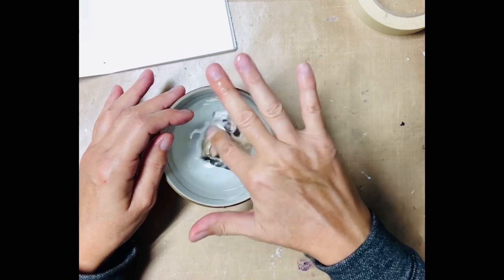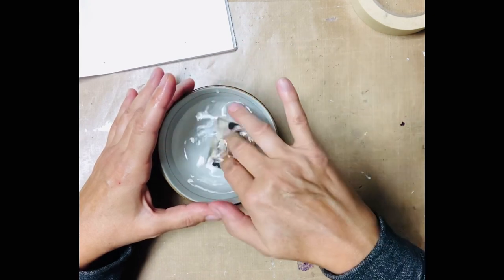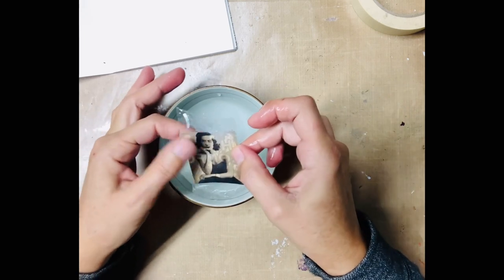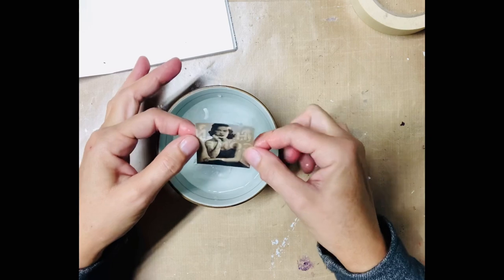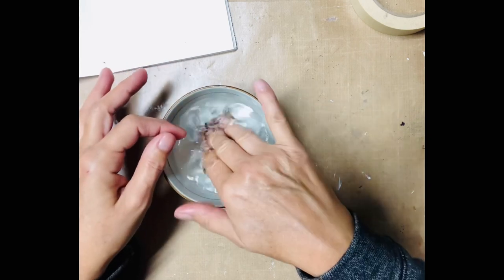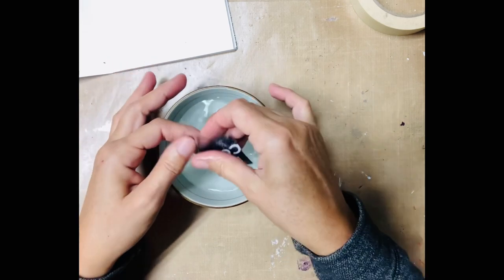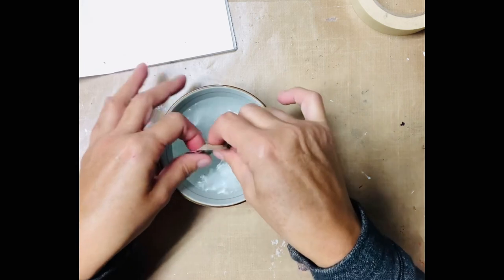And what you want to do is start removing the pulp from the back, the paper pulp. So you're going to leave all that clunky stuff in the bowl. So when it's all removed, you're going to just have the image, the inked image left on the tape.